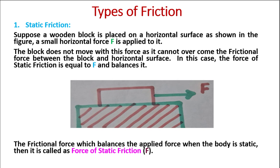Suppose a wooden block is placed on a horizontal surface as shown in the figure. A small horizontal force F is applied to it. The block does not move with this force, as it cannot overcome the frictional force between the block and the horizontal surface. In this case, the force of static friction is equal to F and balances it.